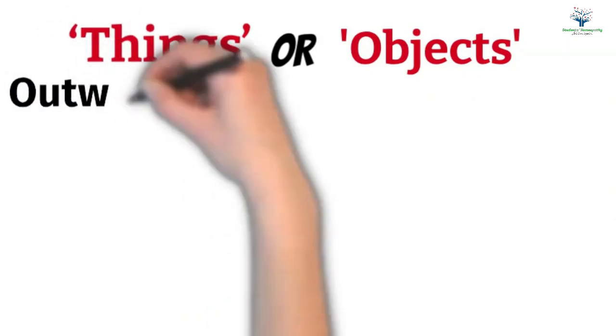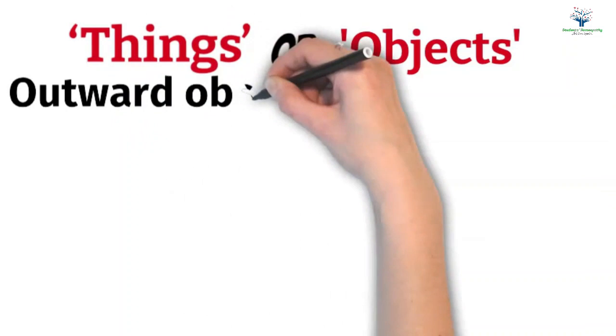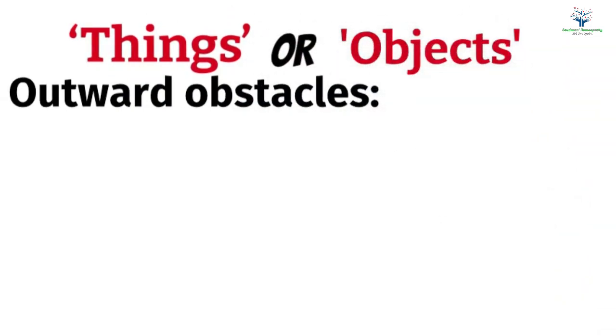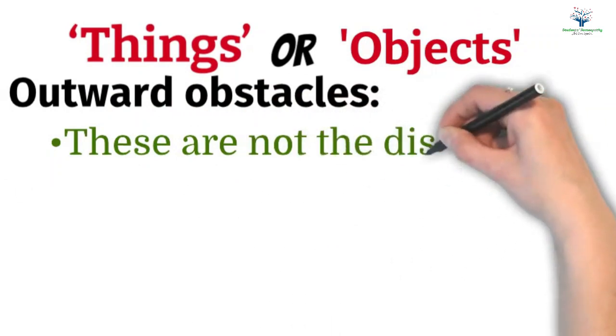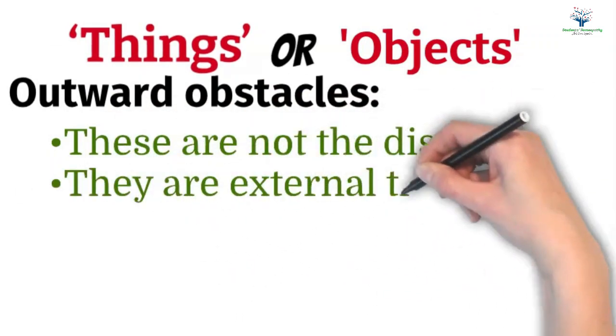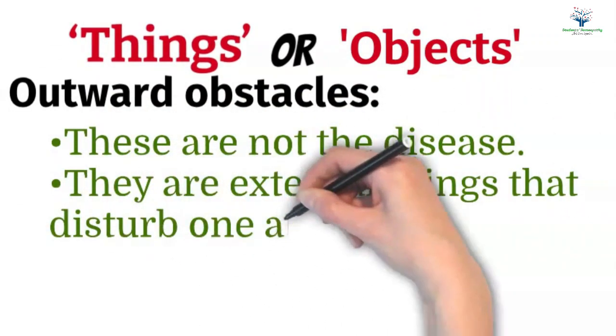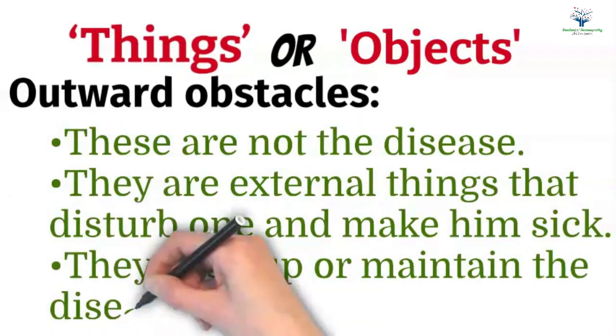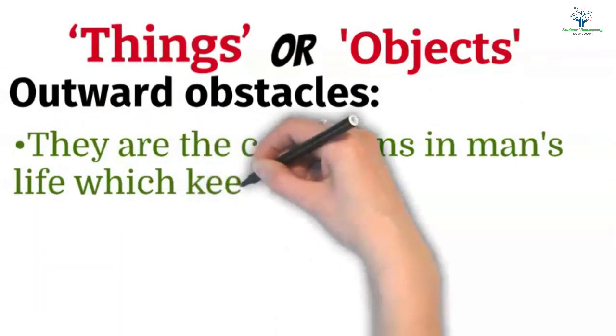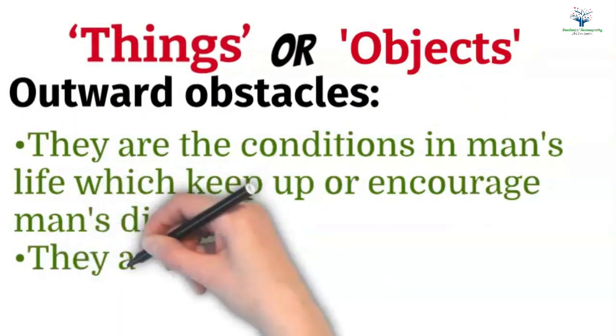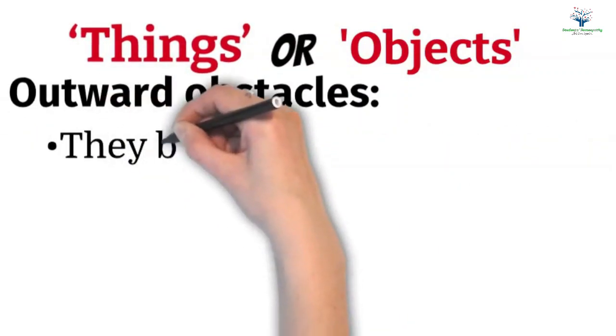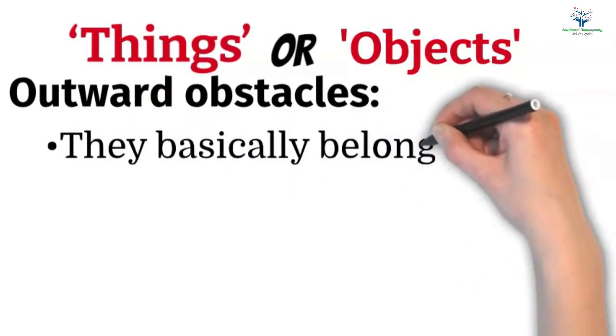So let's first discuss about these outward obstacles. Outward obstacles are not the diseases, they are external things that disturb one and make him sick. They keep up or maintain diseases. They are the conditions in man's life that keep up or encourage man's disorder.